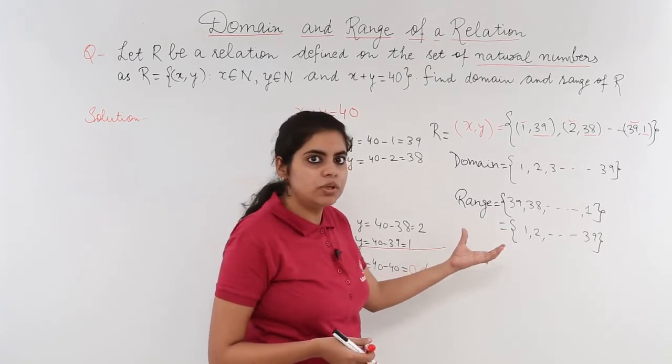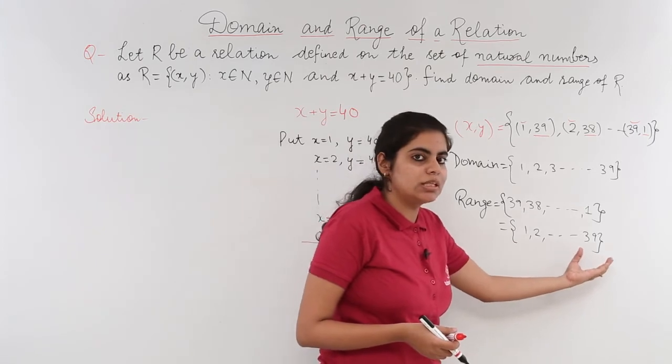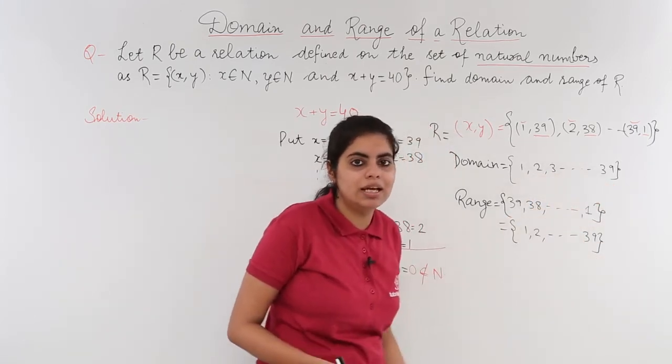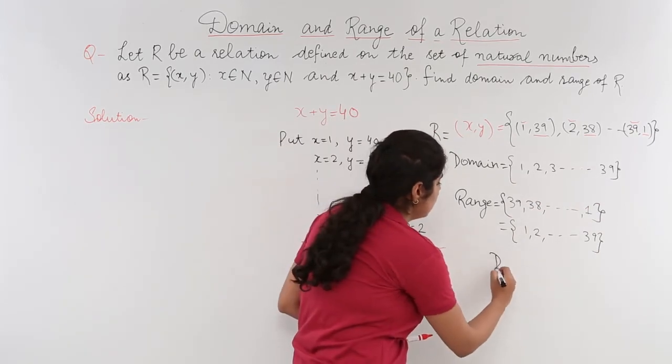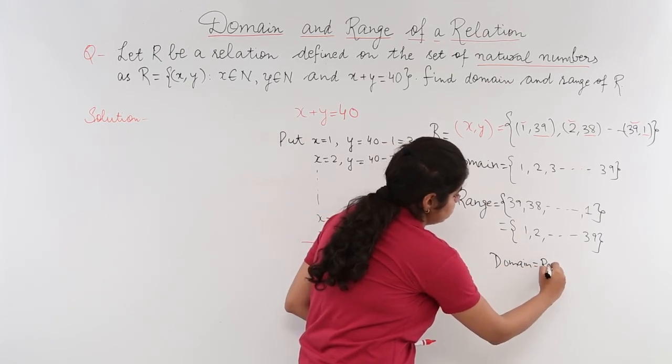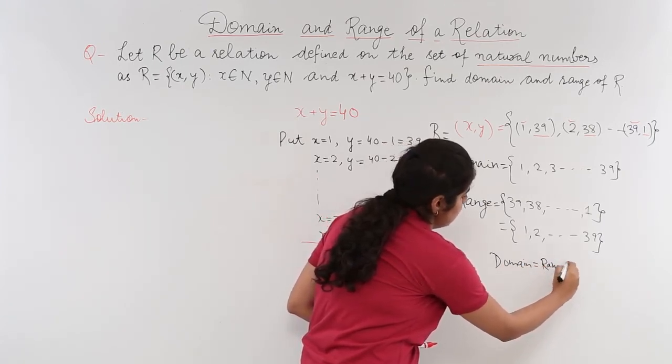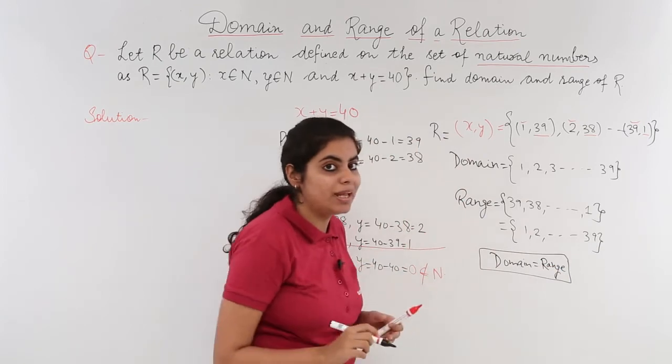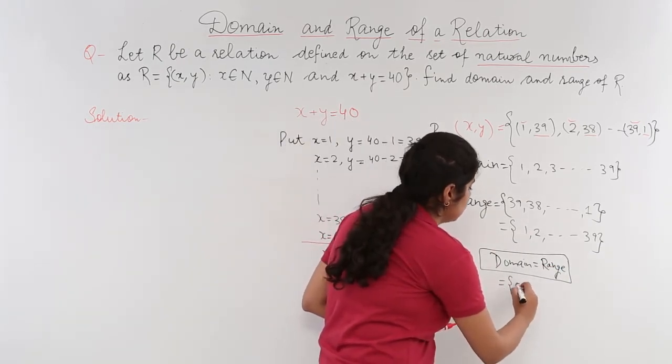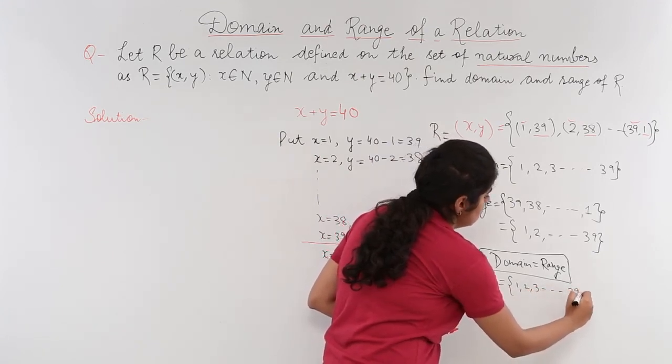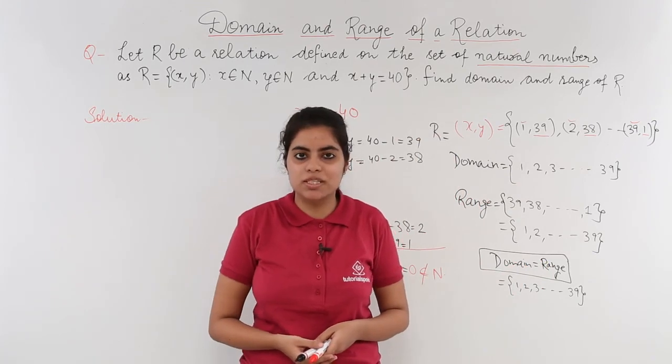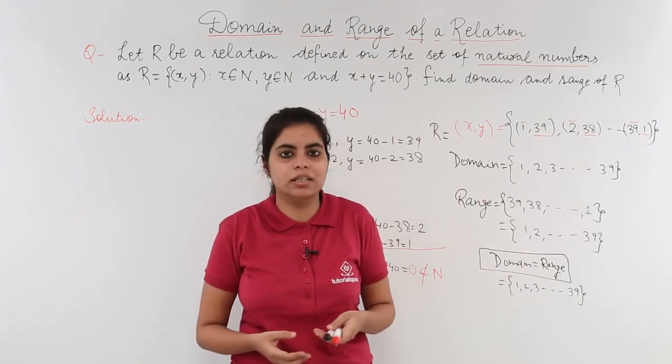Now, what do we note? We observe that this 1, 2, 3 till 39 is basically equal to here: 1, 2, 3 till 39. So in this question, domain is actually equal to range. In this relation, I have found out domain actually equal to range and what was it? It was nothing but the set {1, 2, 3, ..., 39}. So this was a sample problem on the concept of domain and range which we started in the previous video.